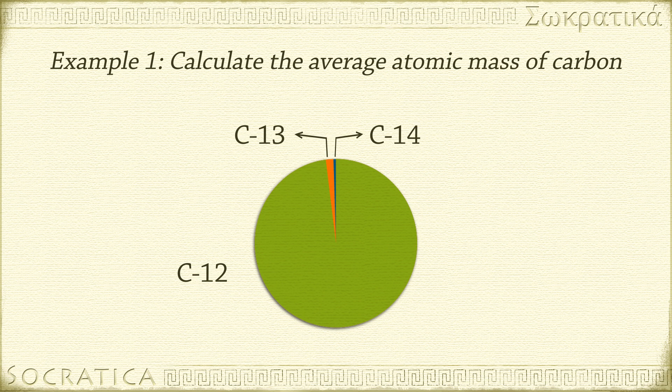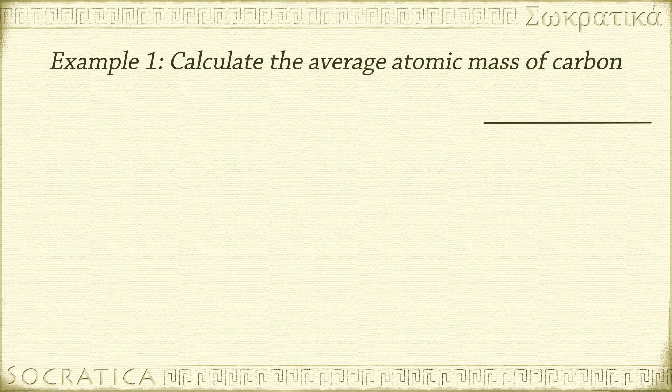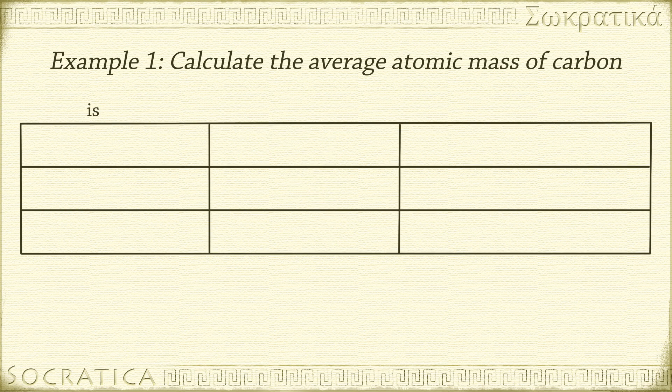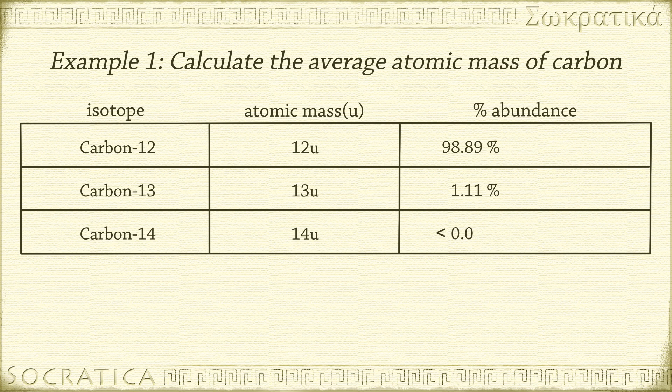To find the average atomic mass of carbon, you take a weighted average of these isotopes, based on their natural percent abundances. First, let's make a table of the isotopes, their masses, and their percent abundances. I would look these up. This isn't something you would know off the top of your head.